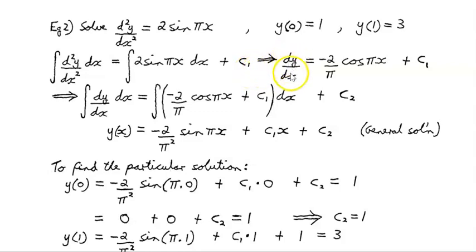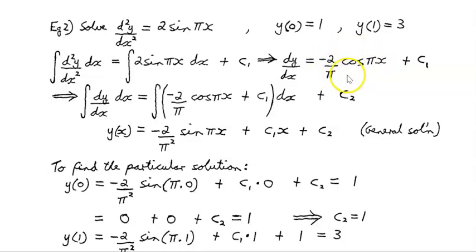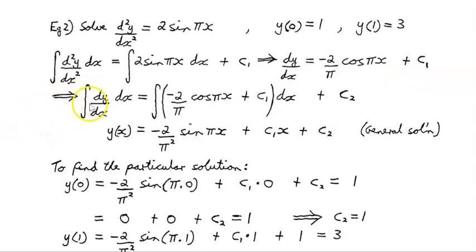That implies that dy/dx, the first derivative, is −(2/π) cos(πx) plus c1. If we differentiate cos(πx), we get −π sin(πx), so we need a factor of 1/π to cancel that, giving us −(2/π) cos(πx) + c1. Now we anti-differentiate again: the integral of dy/dx dx equals the integral of [−(2/π) cos(πx) + c1] dx plus c2.